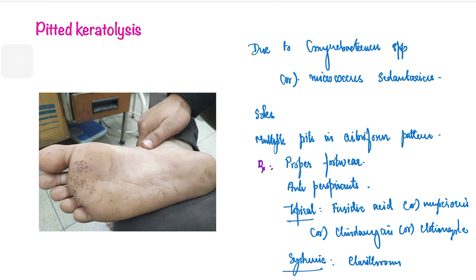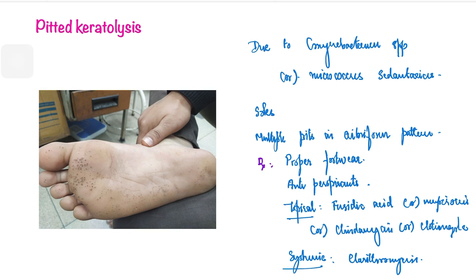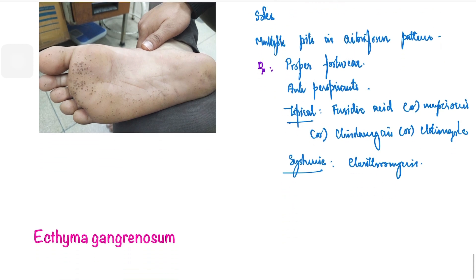Systemic medications include oral erythromycin, which is in the macrolide group of antibiotics. To summarize pitted keratolysis: caused by Corynebacterium and Micrococcus sedentarius, soles are involved, multiple pits in cribriform pattern. Treatment includes proper footwear, antiperspirants, topical antibiotics such as fusidic acid, mupirocin, clindamycin, or clotrimazole, and systemically clarithromycin if extensively involved.